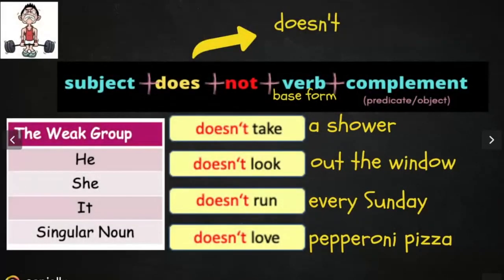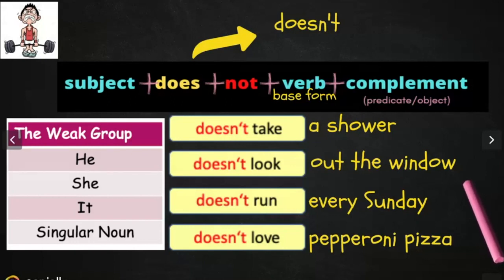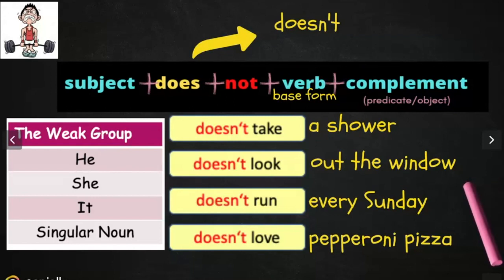For the weak group, we're going to use this formula: subject plus does plus not plus the verb in base form plus the complement. Does and not becomes doesn't. Examples: he doesn't take a shower, she doesn't run every Sunday, my friend doesn't love pepperoni pizza.